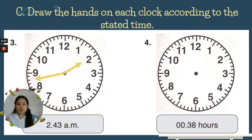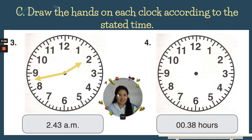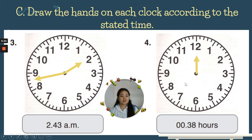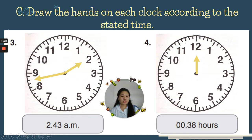Number four is 00:38. Zero-zero means twelve, so the small hand points at twelve. The minutes is 38 — five, ten, fifteen, twenty, twenty-five, thirty, thirty-five, then thirty-six, thirty-seven, thirty-eight. So that is the long hand.